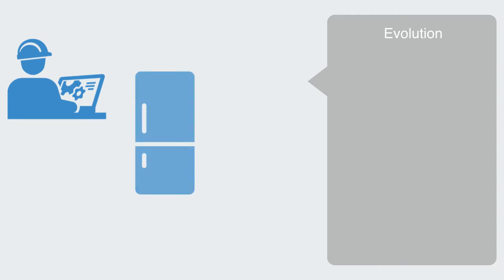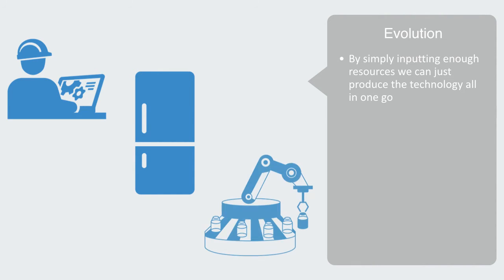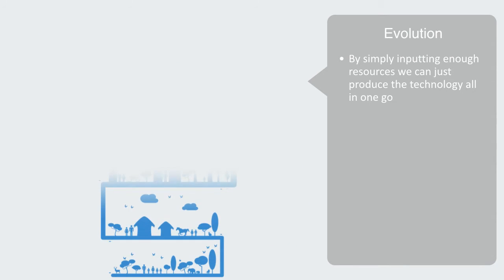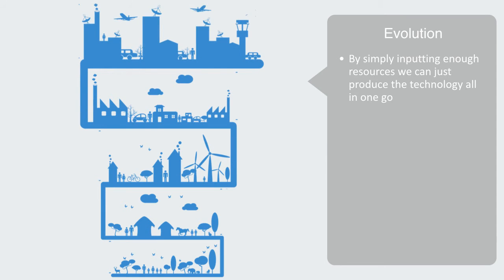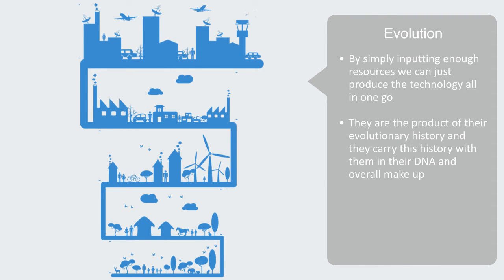Because we can fully control and design simple linear technologies like a refrigerator, we can take our design and by simply inputting enough resources, we can produce the technology all in one go, rolling them off the production line. But complex engineered systems like cities and the internet don't just pop into existence like this. Instead, they start out simple and go through a process of evolution to become complex. They are the product of their evolutionary history and carry this history with them in their DNA and overall makeup — the expression of the evolutionary process that created them.